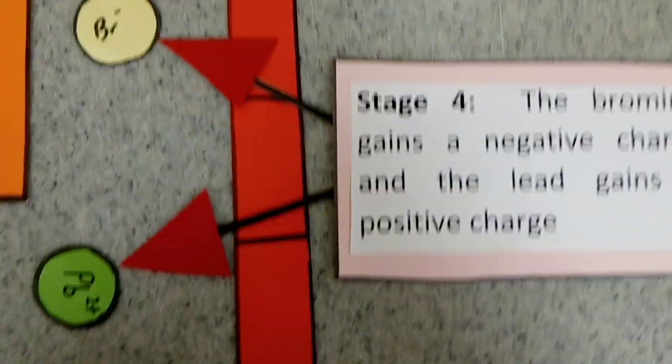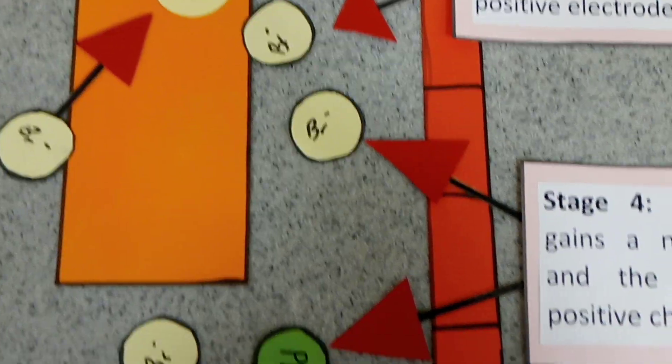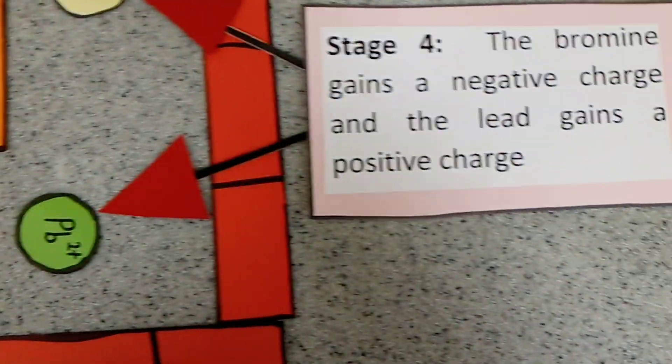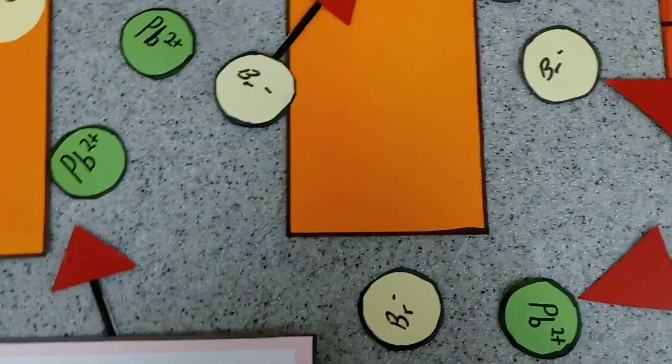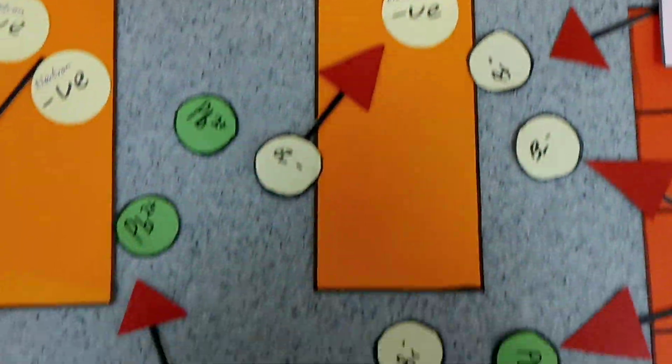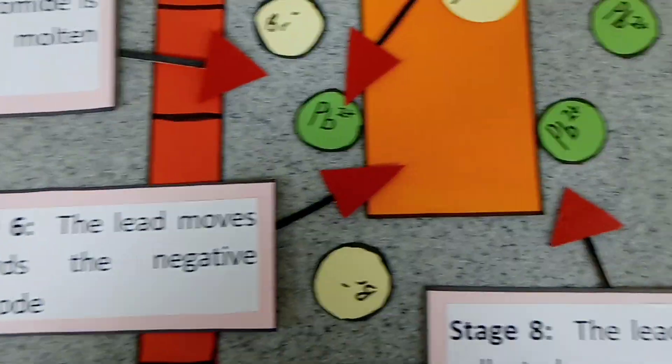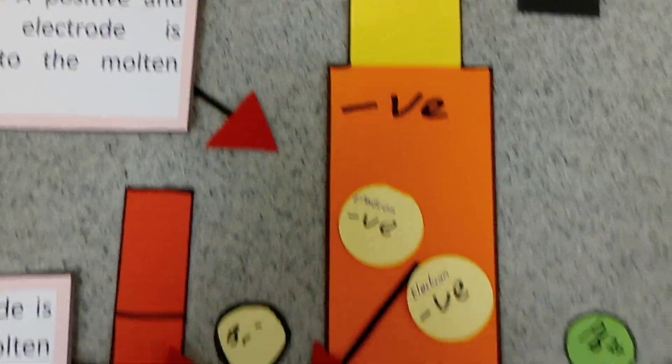This causes the bromine to get a negative charge and the lead to get a positive charge. The bromine moves towards the positive electrode because that's its opposite charge. The lead moves towards the negative electrode.